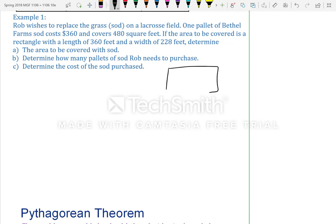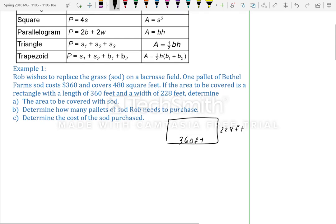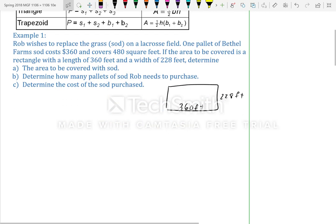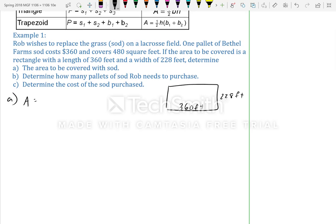So, it tells us we have a rectangular field, and the dimensions are 360 feet by 228 feet. Since we have a rectangle, we need to find the area that's going to be covered. That's area equals length times width, or area equals base times height, it's the same thing. So, for part A, area equals length times width, which is 360 feet times 228 feet, and we get 82,080 feet squared. Remember, because area is squared, so that's the total area that needs to be covered, just under 82,100 square feet.